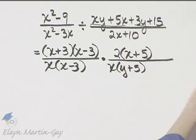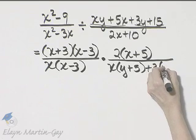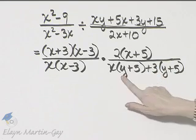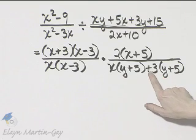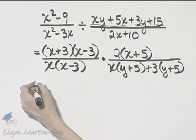Second pair of terms, common factor of 3, and I'm left with y plus 5. Now, I have not finished factoring here. I have not written as a product. I've only written as a sum, so I will continue factoring down there.